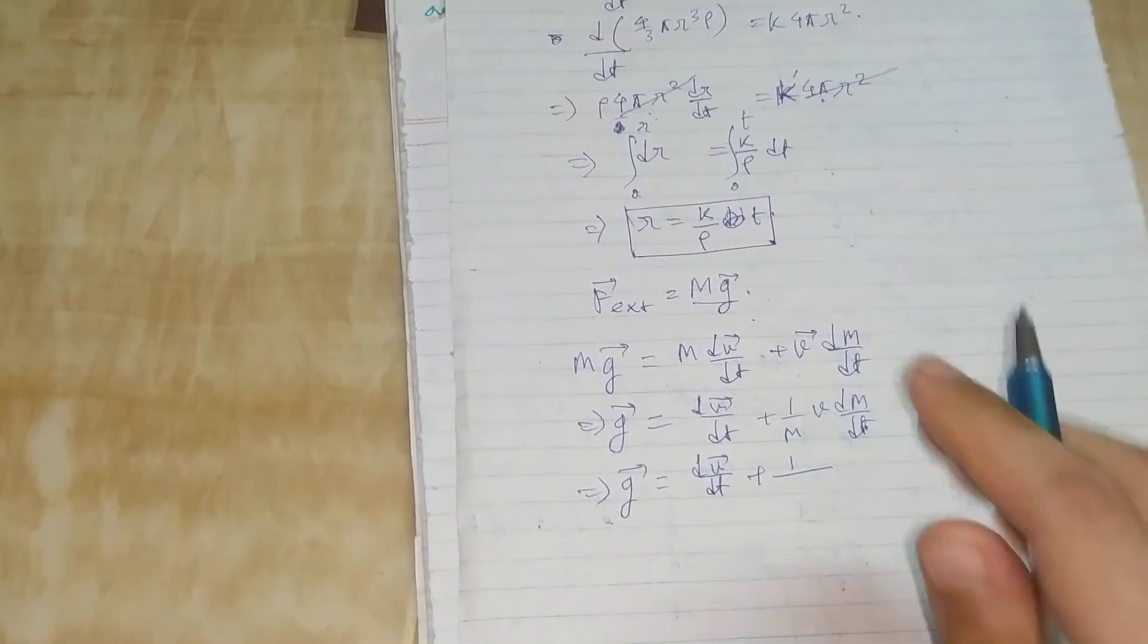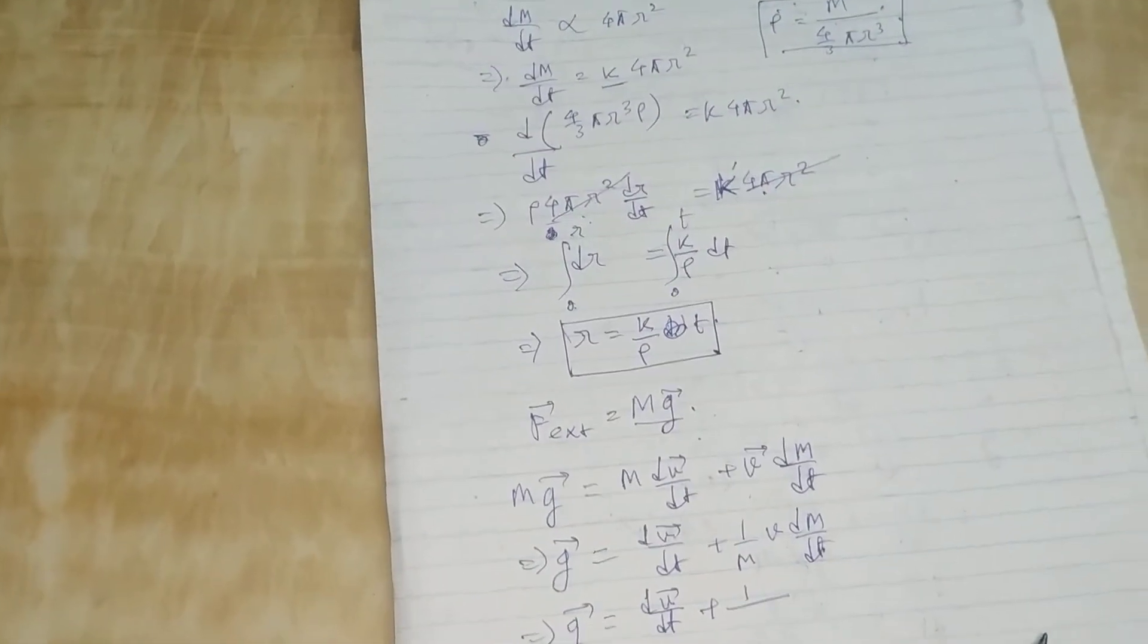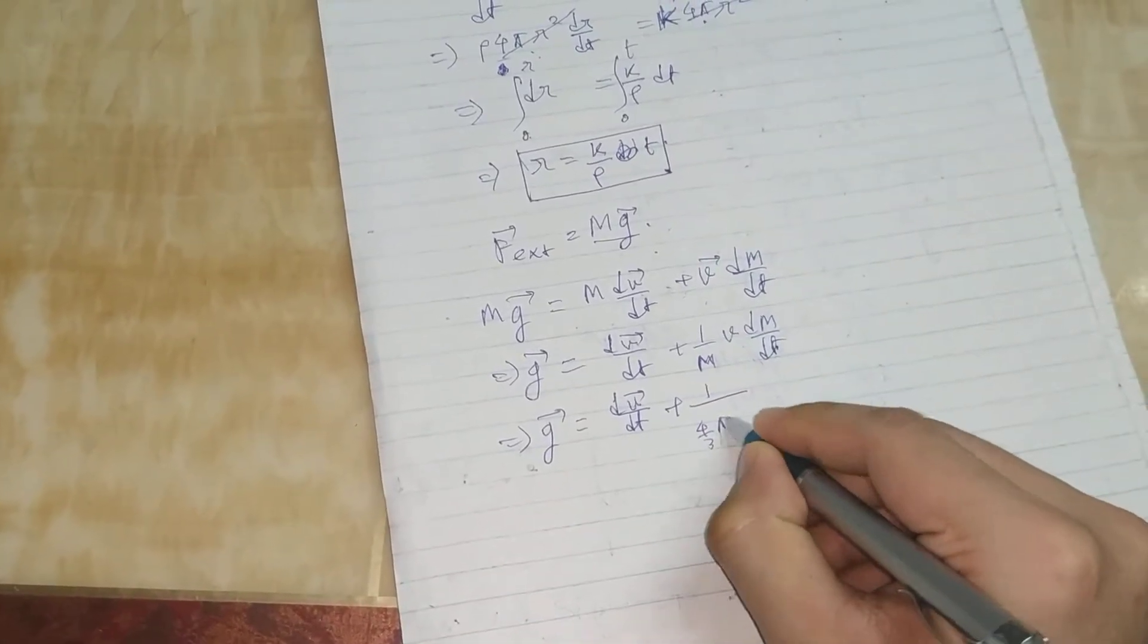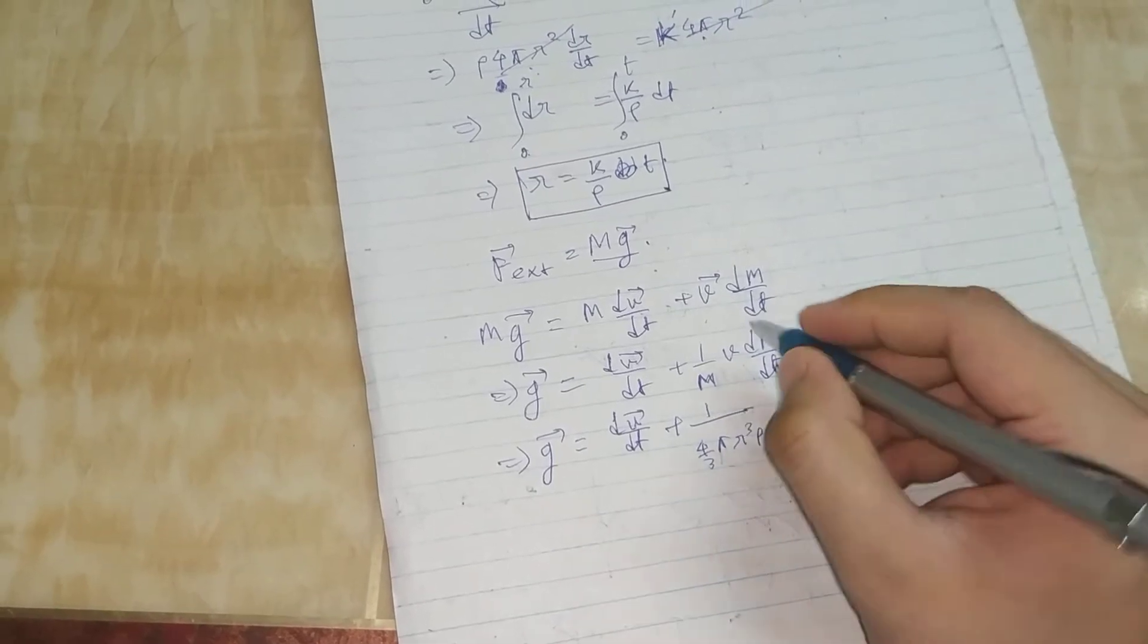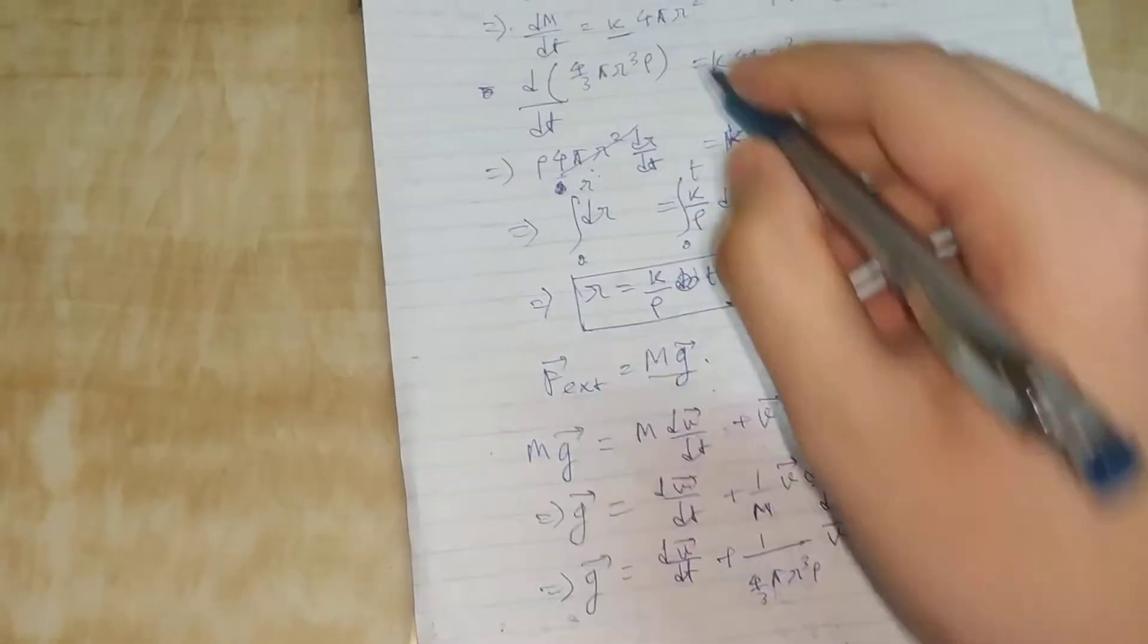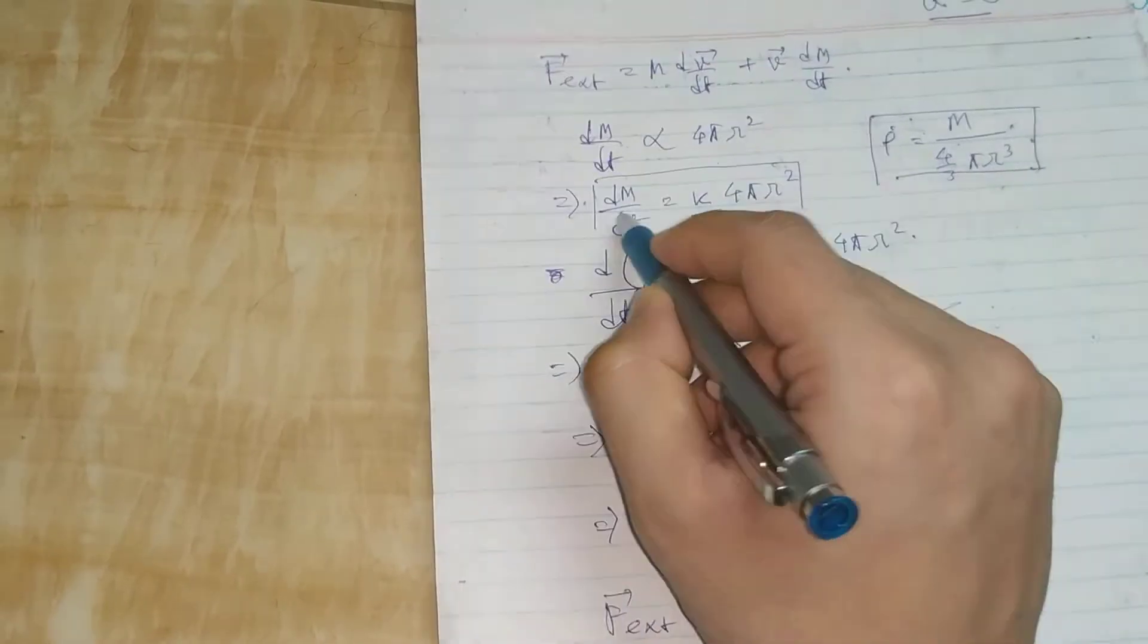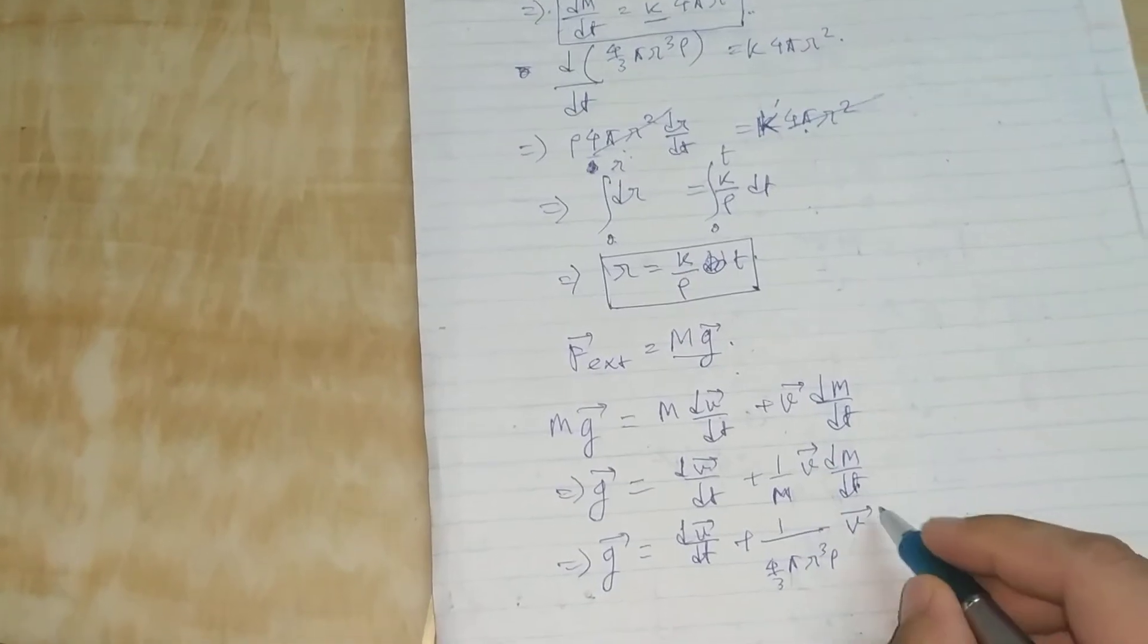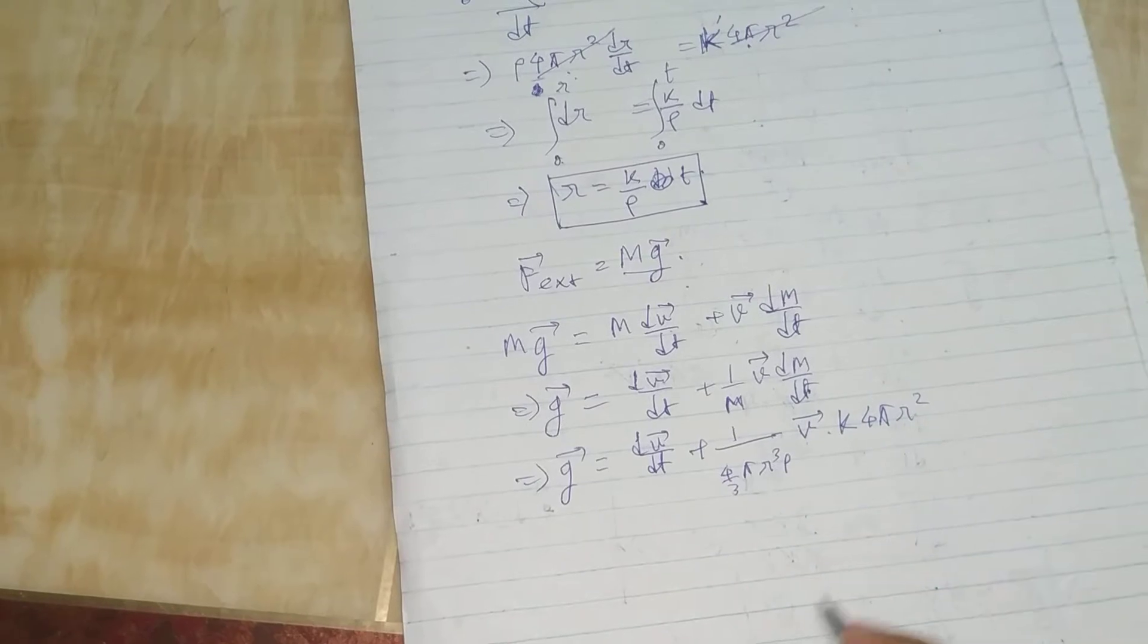From this relation, we can write d(mv)/dt = m(dv/dt) + v(dm/dt). From this relation here, dm/dt = K(R²)(dR/dt), which gives us (dR/dt) = dm/(KR²dt).